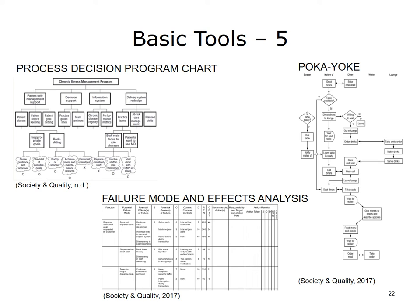The Process Decision Program Chart is a type of contingency plan that guides the efforts of a team when things do not turn out as expected. The actions to be completed are listed, then possible scenarios about problems that could occur are developed. Management decides in advance which measures will be taken to solve those problems should they occur. This chart can be helpful when a procedure is new and little or no experience is available to predict what might go wrong. TOG, 2004.